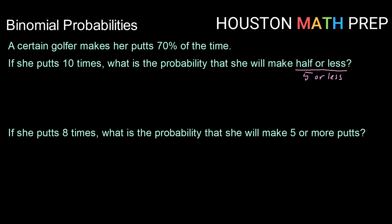5 or less does include 5. So our n, our number of trials, will be 10. Our probability of success will be 0.7 for 70%. And we are going to find the probability that x is less than or equal to 5 because it's 5 or less.